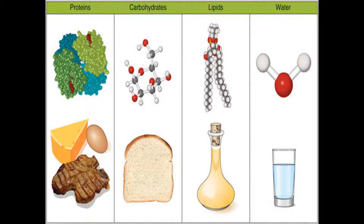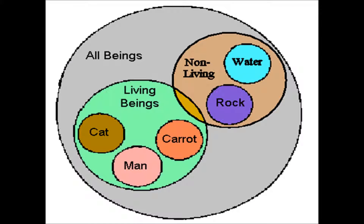These elements, whether present in living or non-living forms, obey the same rules of physics and chemistry. For example, an iron atom will be the same whether it is present in the human body or in an iron nail.